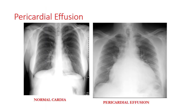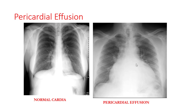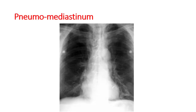Pericardial effusion: the heart shadow is enlarged and globular in shape. Approximately 400 to 500 ml of fluid must be present in the pericardium to lead to a detectable change in heart shadow size on chest X-ray. Pericardial effusion can be definitively diagnosed with echocardiography or CT scan.